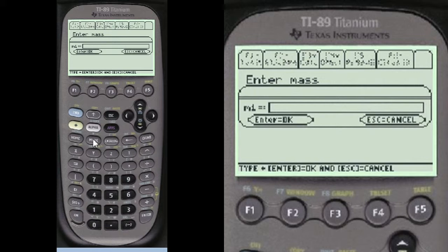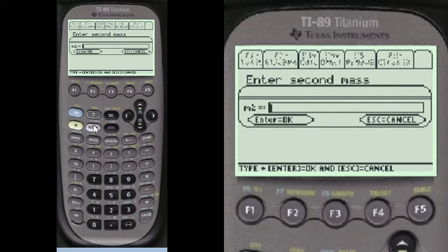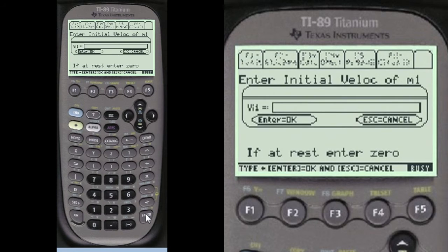And we're going to enter the mass. Alpha 90 for the first mass, 90 kilograms. Alpha 130 kilograms.